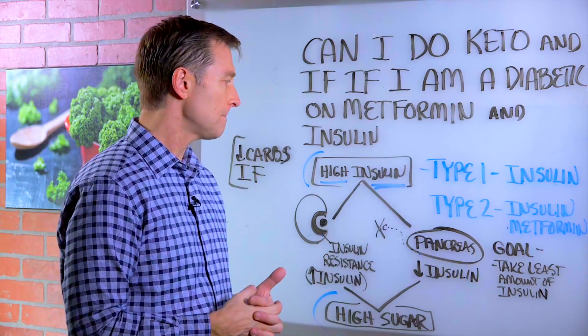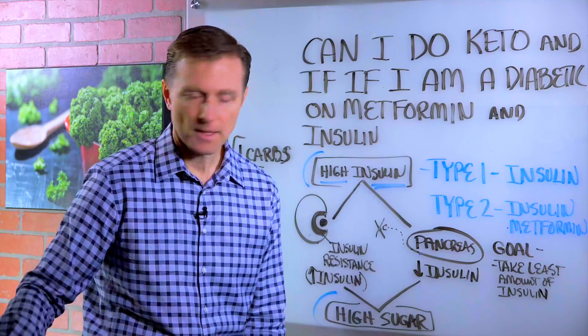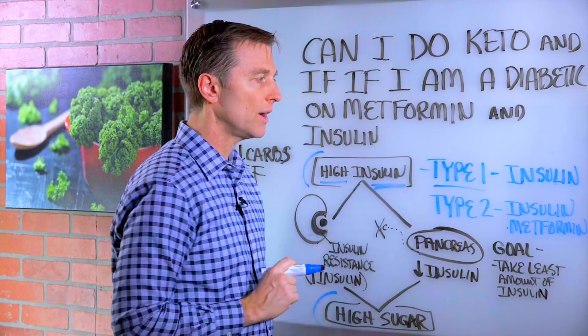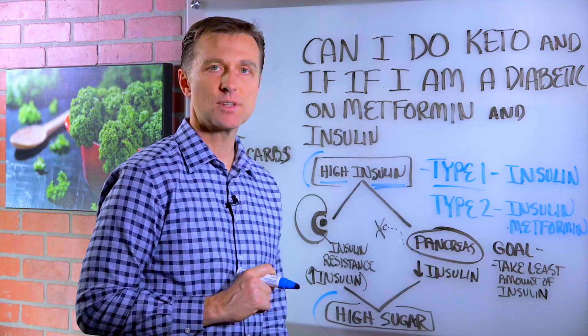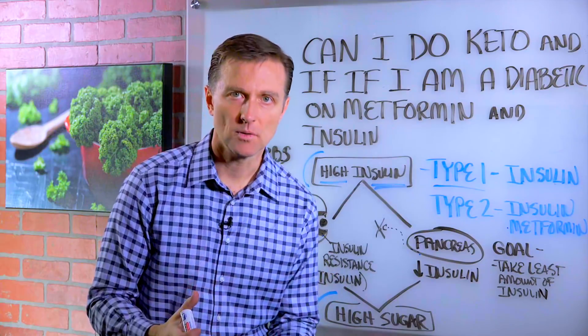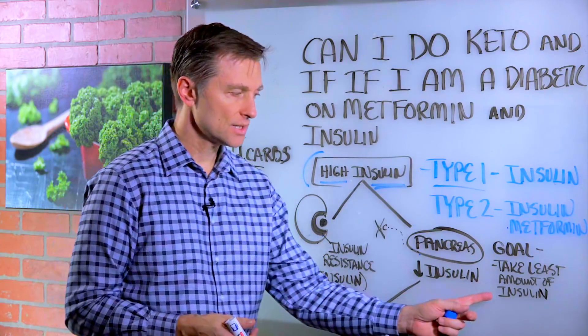So the goal is to take the least amount of insulin possible. If you're a type 1, maybe your cells are completely destroyed of any chance of recovering, but we still want you to take the least amount of insulin possible. So it would make sense to avoid the triggers of insulin.